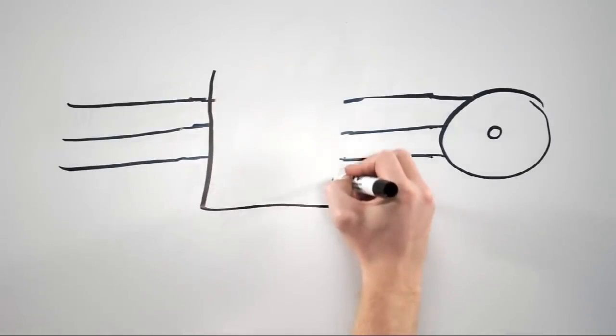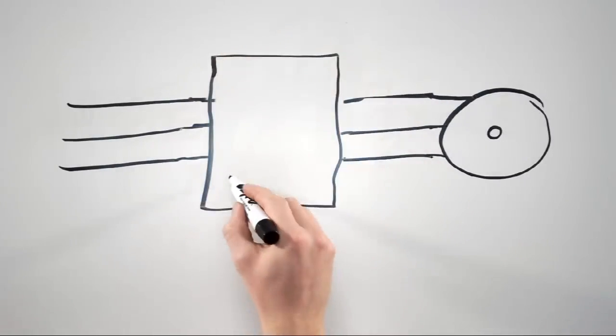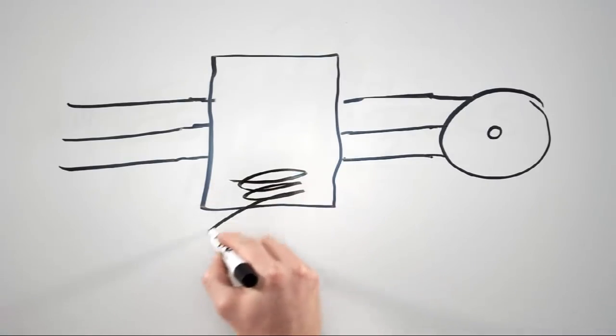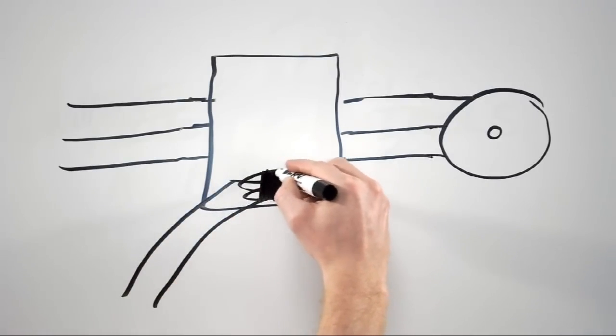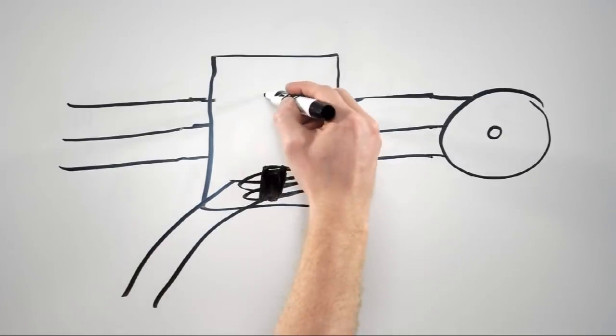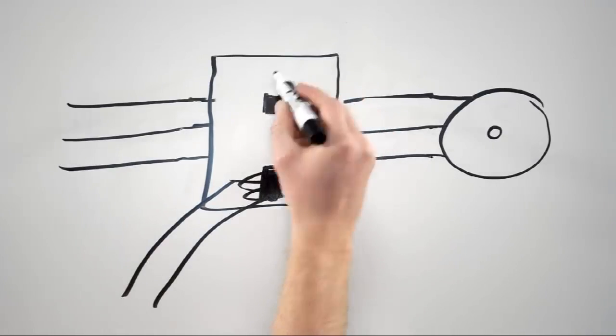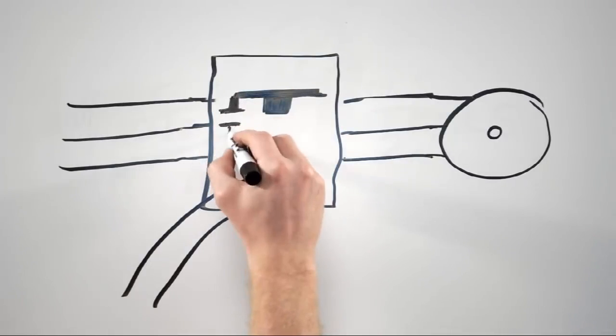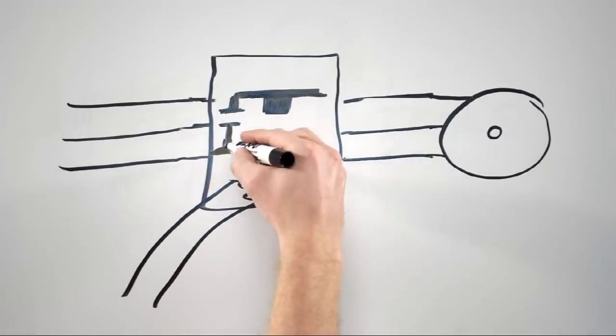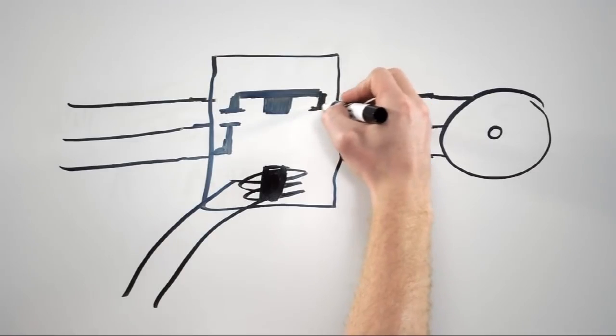So they invented this thing called a contactor. Inside the contactor there is a coil of wire wrapped around a piece of metal. Above that piece of metal there is another piece of metal that is attached to an electrical bridge, which connects contacts on one side to the other side. This top portion, the metal attached to the electrical bridge, is called an armature.